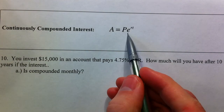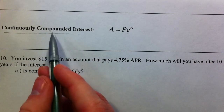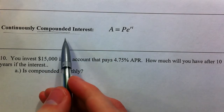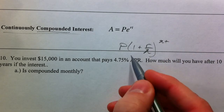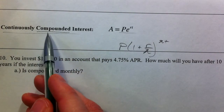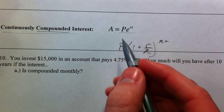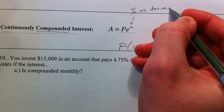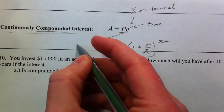Another area where the letter E is really useful is with continuously compounded interest. We brought up compound interest where you compound it more than once a year — you calculate your interest more than once a year. That equation was P times 1 plus R over N, raised to the Nt. This is an approximation for if we calculate it continuously. More than every second, we calculate it continuously, and so this E is the natural number E. R is still your percent as a decimal, T is still your time, and P is still your principal — your initial value.